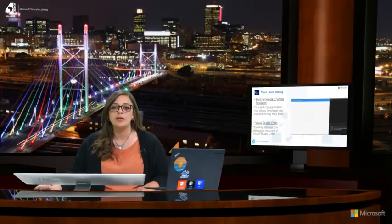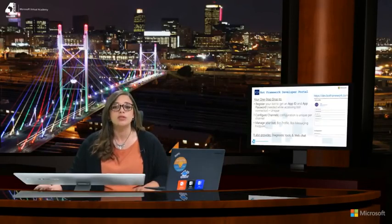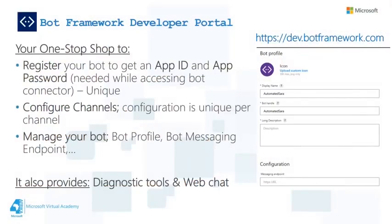The third pillar is the developer portal — the one-stop shop to register your bot, where you can acquire the app ID and app password that ensures your bot endpoint can only be accessed through the Bot Framework Connector. Through the portal, you can configure the channels that users can use to chat with your bot, manage the bot's profile picture, description, and handle, and use diagnostic tools and web chat to test your bot once you set its messaging endpoint.